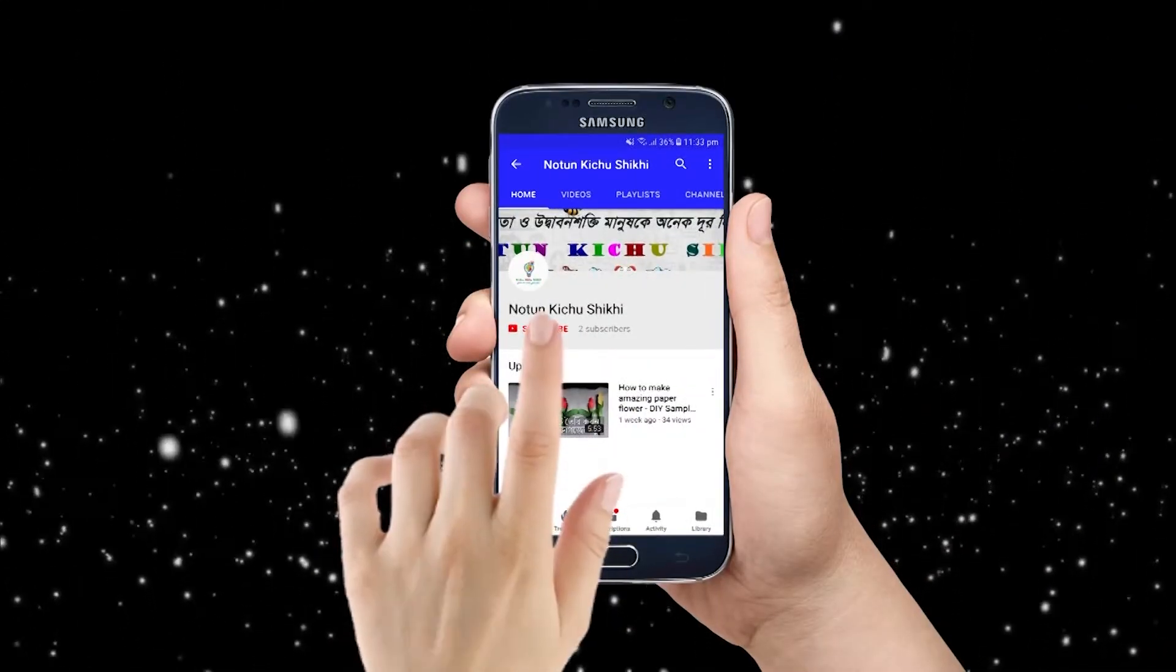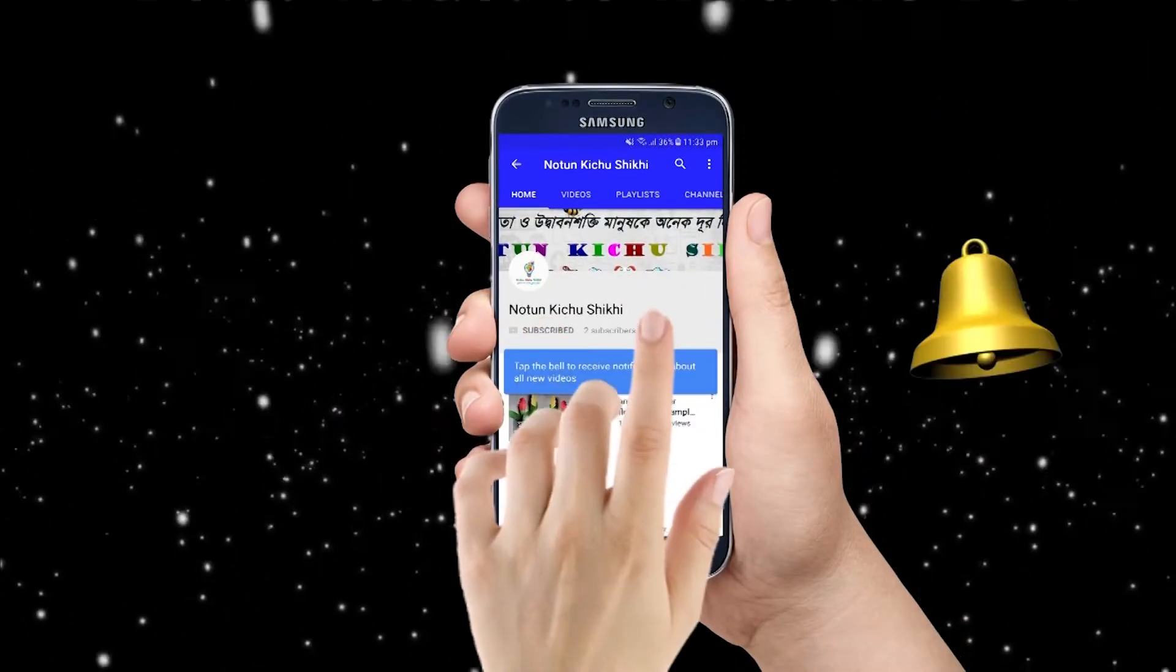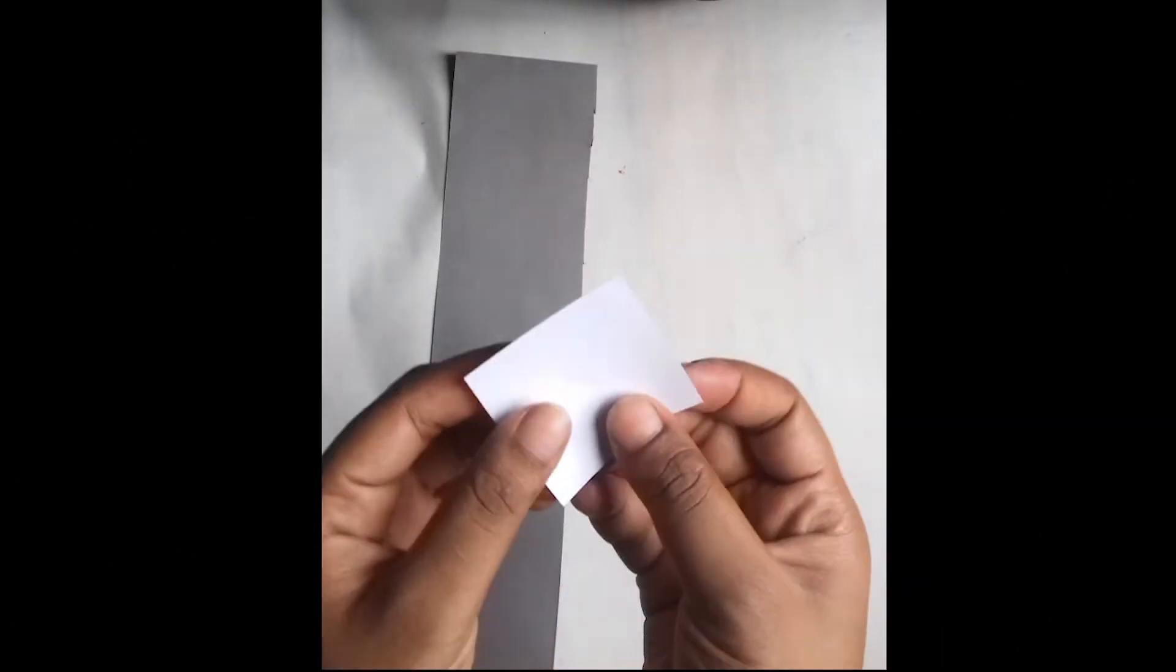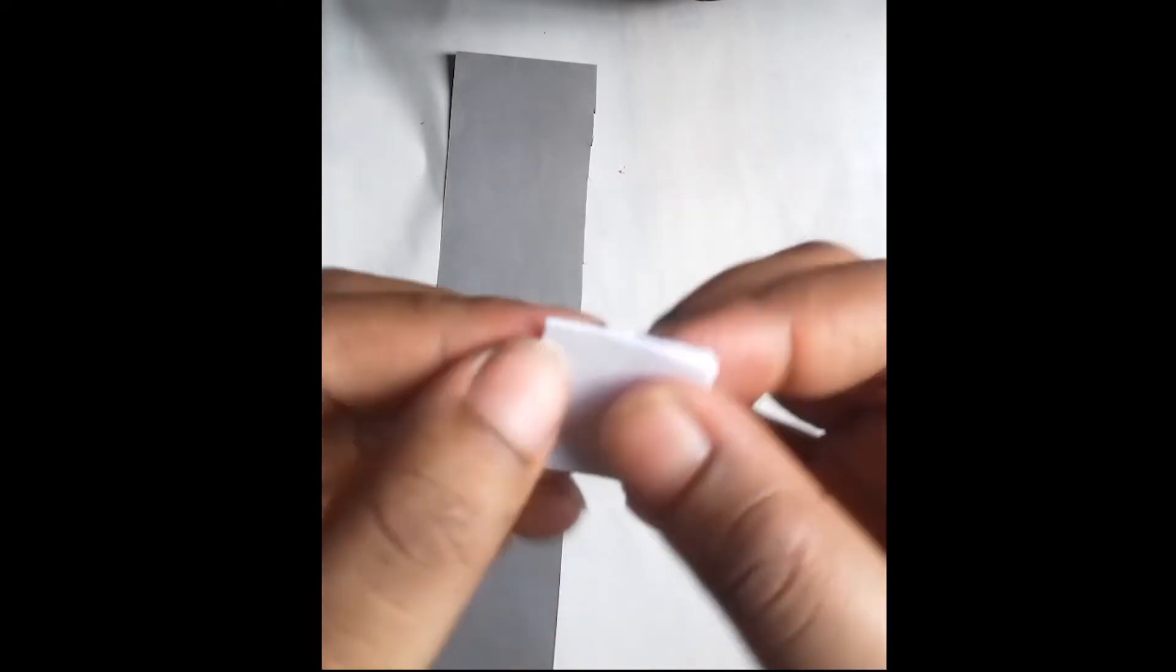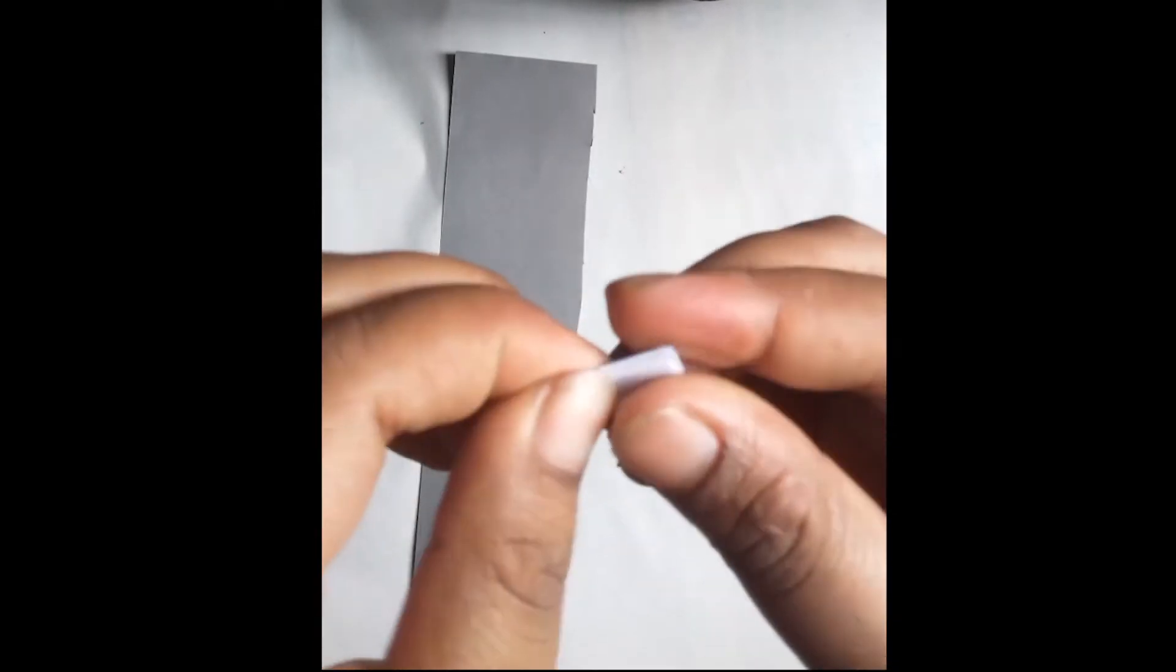Now take the 4 x 4 cm paper and crease it with your hands. Fold it again until the shape becomes a triangle.